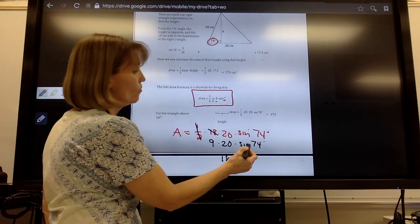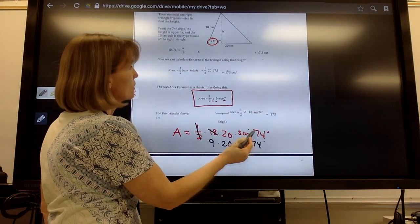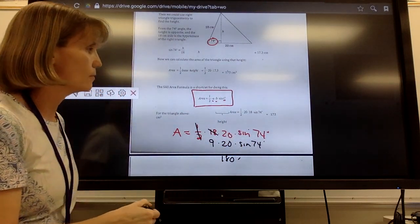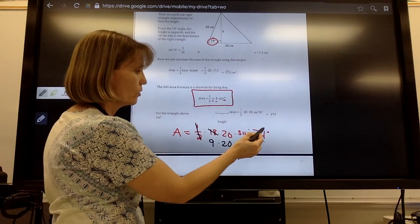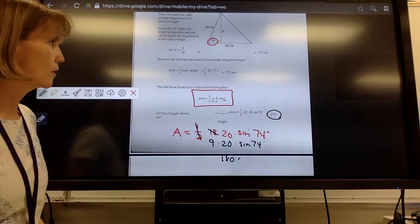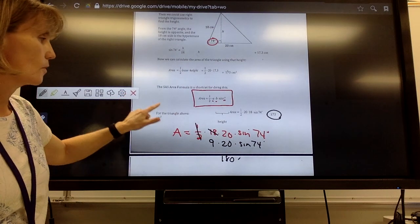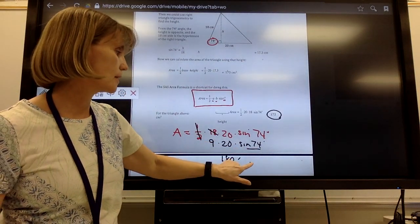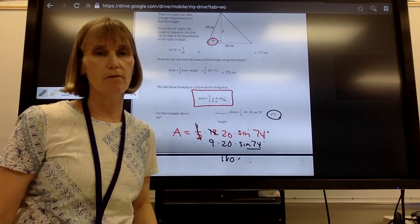And then the sine of 74 degrees, that's going to come off of your table of values. And we're going to get the same thing. We're going to get an answer of 173. This value is going to be a decimal, and you're going to have to plug that in and take that off of your table.